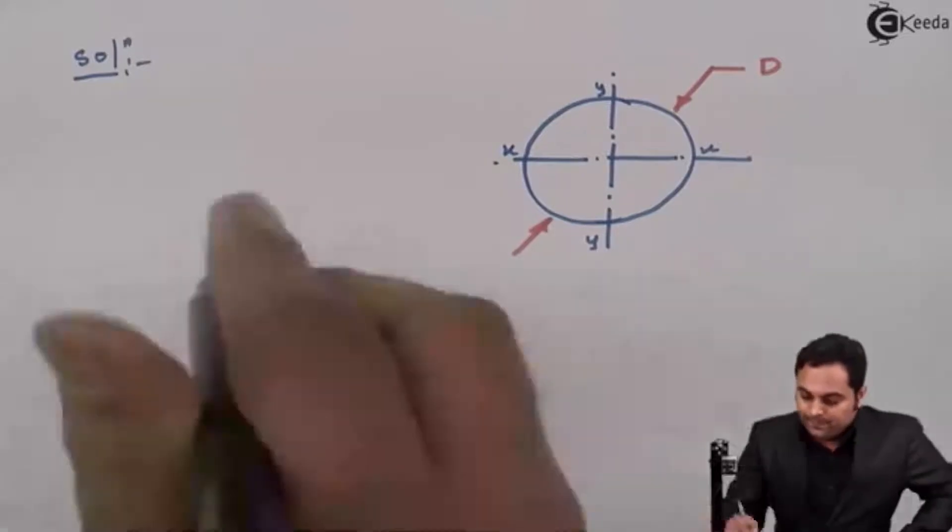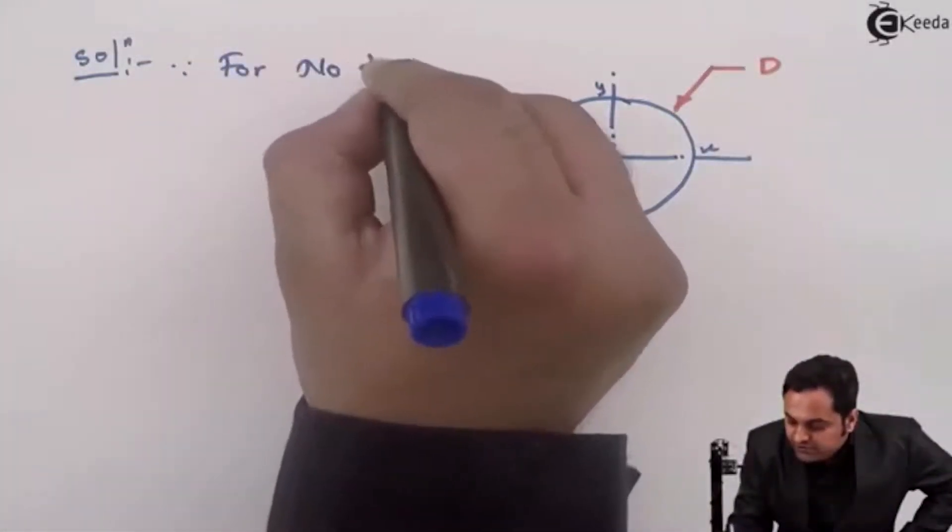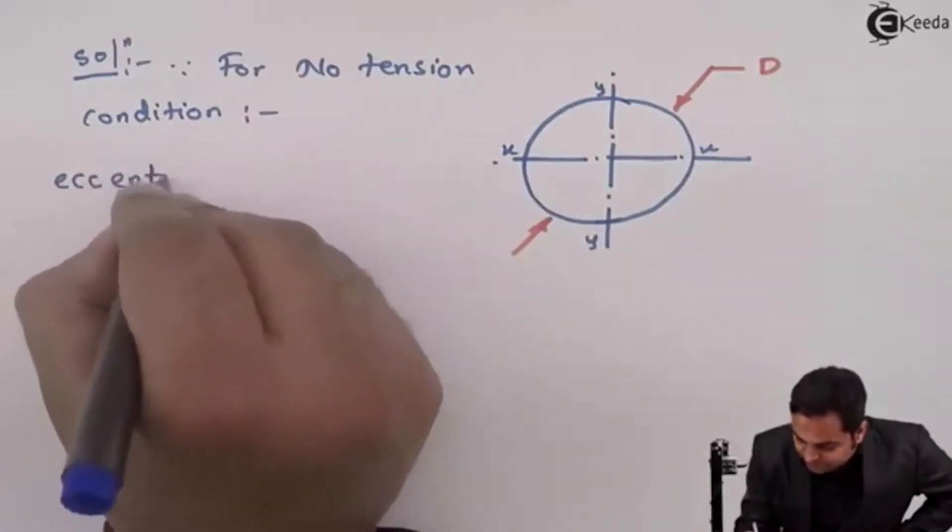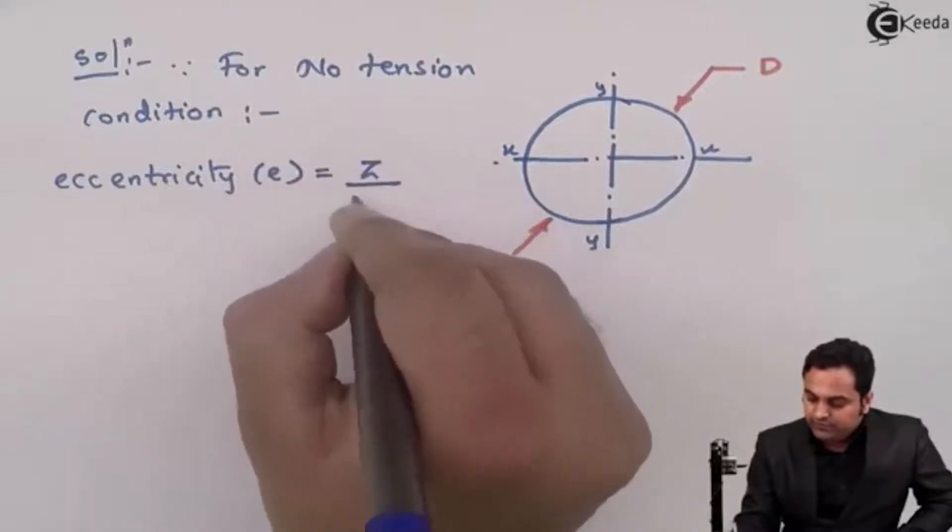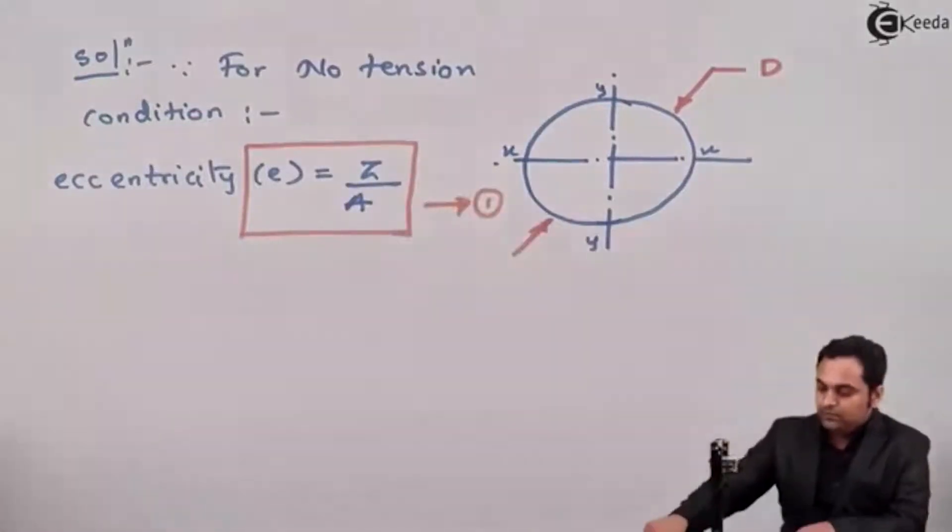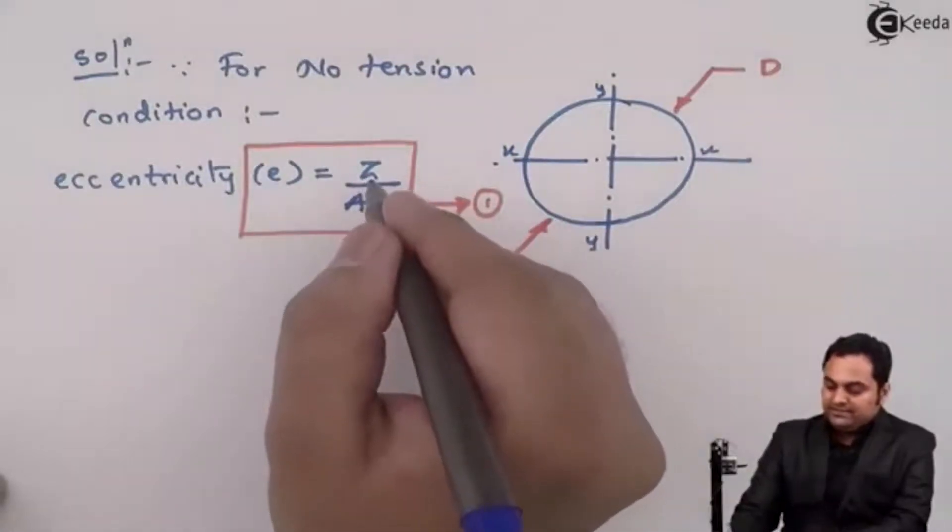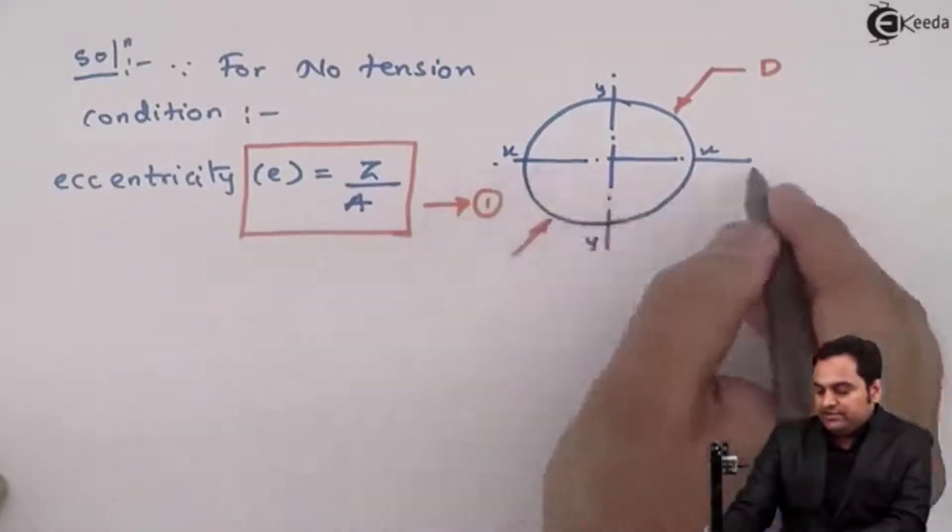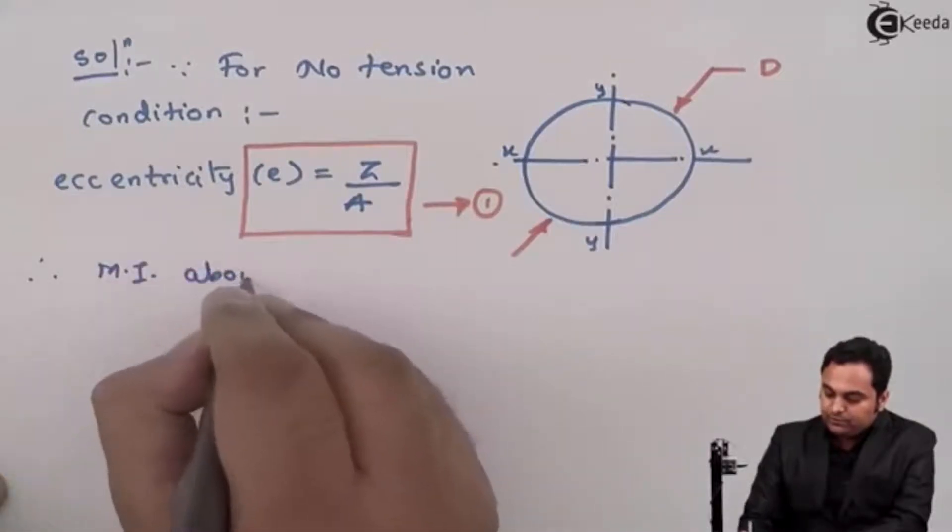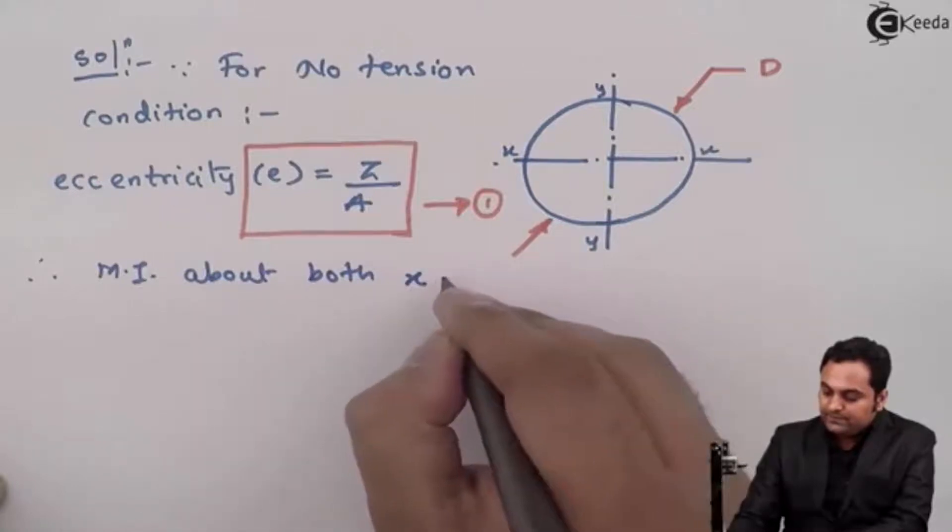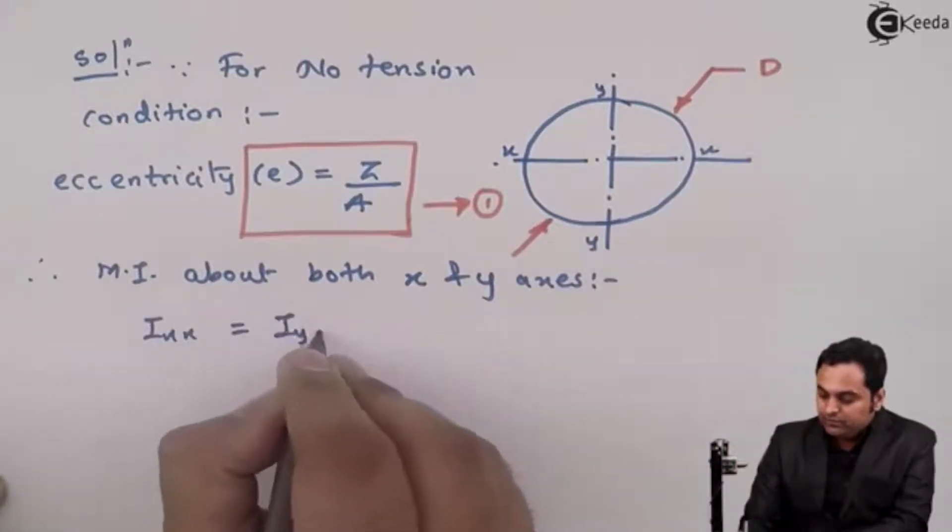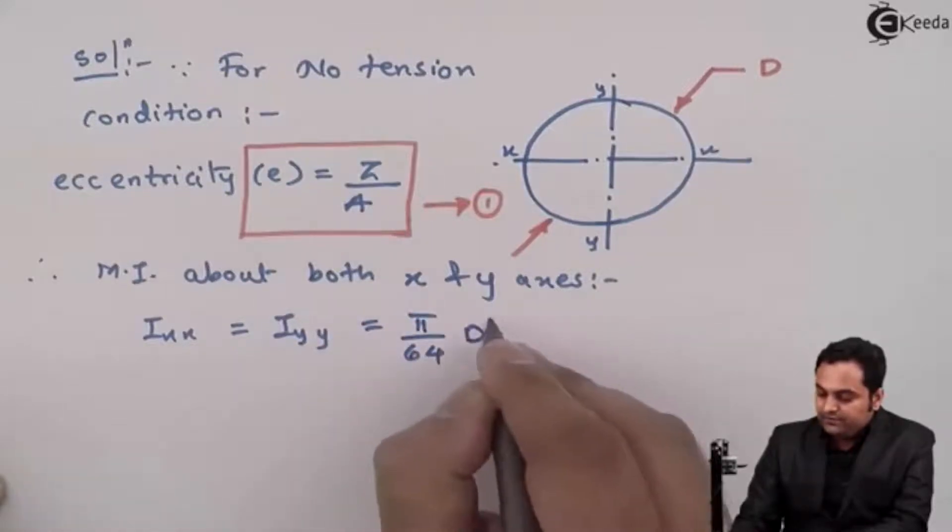Since for no tension condition eccentricity E should be equal to Z upon A, I'll keep this as equation number 1. Now for Z we require the section modulus, so we need ZXX and ZYY and for that we require IXX and IYY. Therefore MI about both X and Y axis for a circular section this will be IXX is equal to IYY and that is π by 64 D raise to 4.